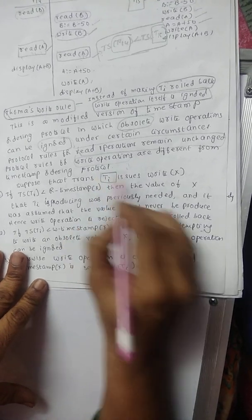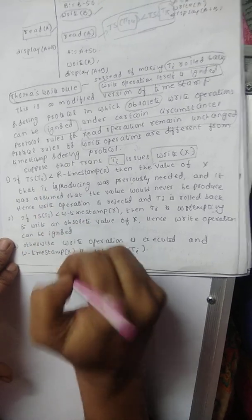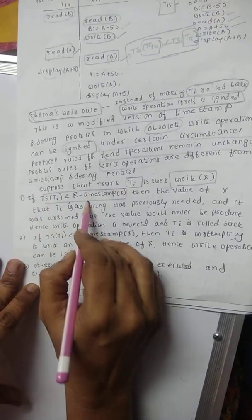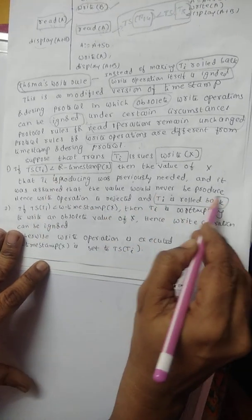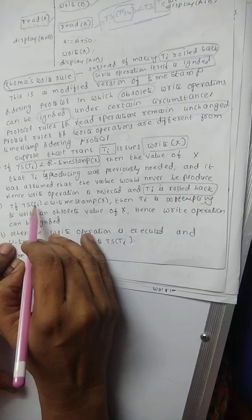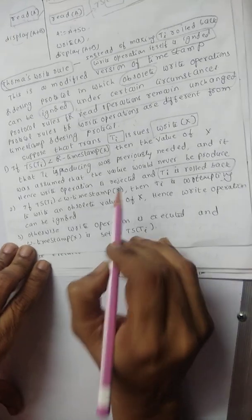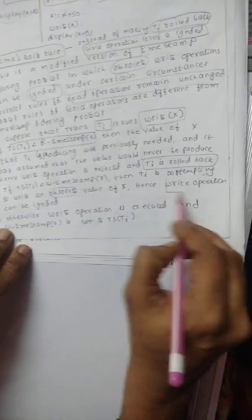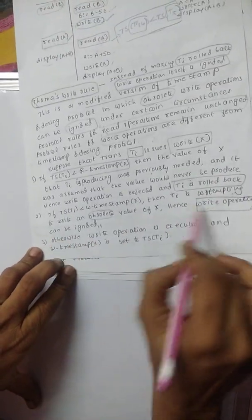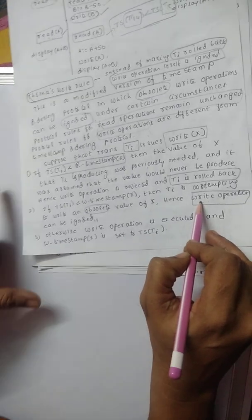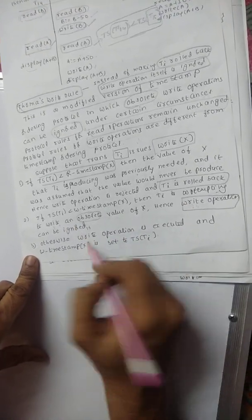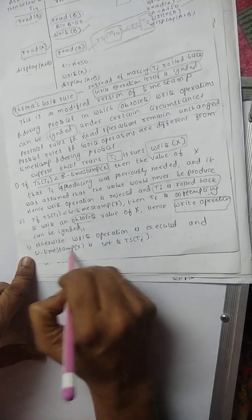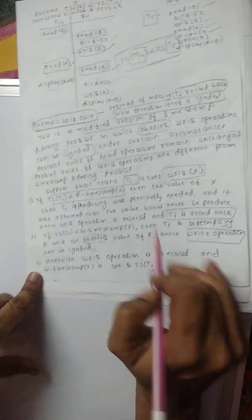In the Thomas Write Rule, for a write operation by transaction Ti: if TS of Ti is less than the read timestamp of X, the write is rejected as it would produce an outdated previous value. However, in the second case, if TS of Ti is less than W-timestamp of X — an obsolete write — instead of rejecting and rolling back, we simply ignore that write operation. In the third case, the write operation is executed normally and W-timestamp of X is set to TS of Ti.